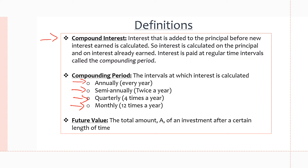Lastly, we have future value, and this is the total amount of an investment after a certain length of time. This is basically the same as amount for simple interest, but now we're working with compound interest, so we use the name future value, which uses the same variable A.